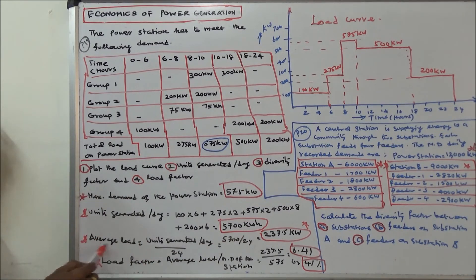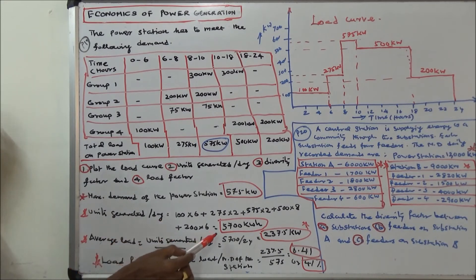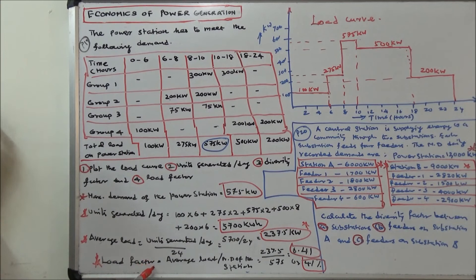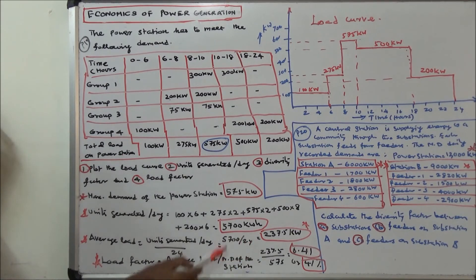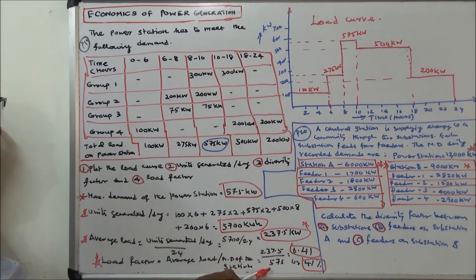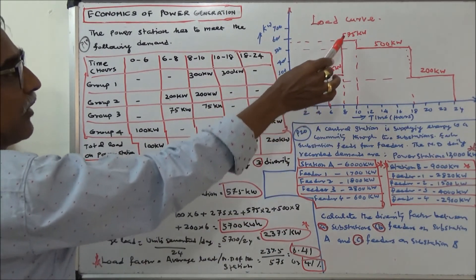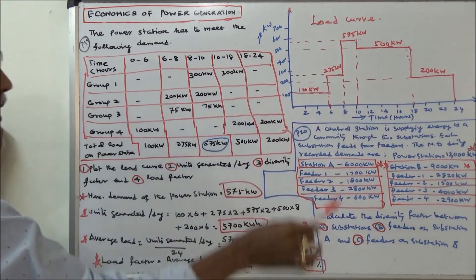Average load equals units generated per day divided by 24: 5700 ÷ 24 = 237.5 kW. Load factor equals average load divided by maximum demand: 237.5 ÷ 575 = 0.41 or 41%. The load curve shows: 100 kW, 275 kW, 575 kW, 500 kW, and 200 kW at the respective time intervals.